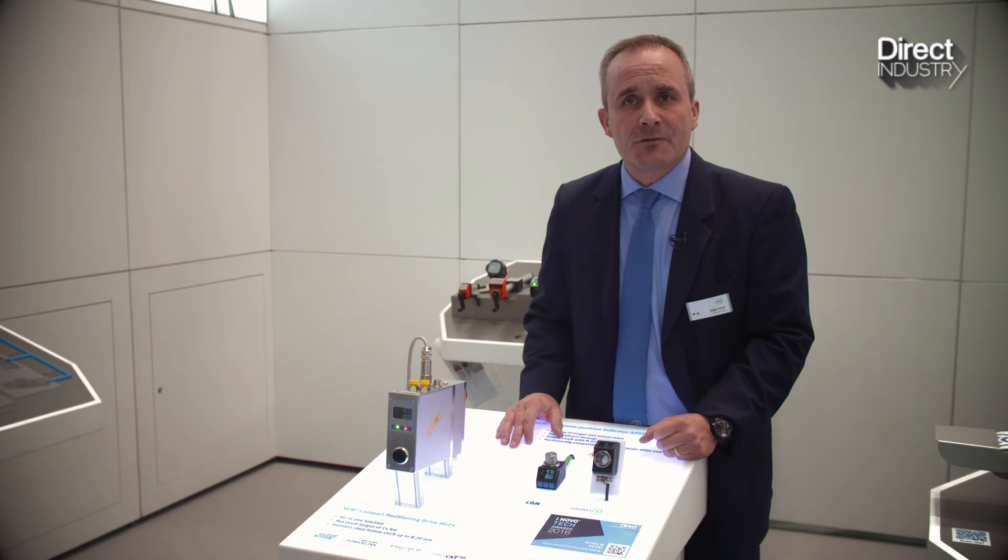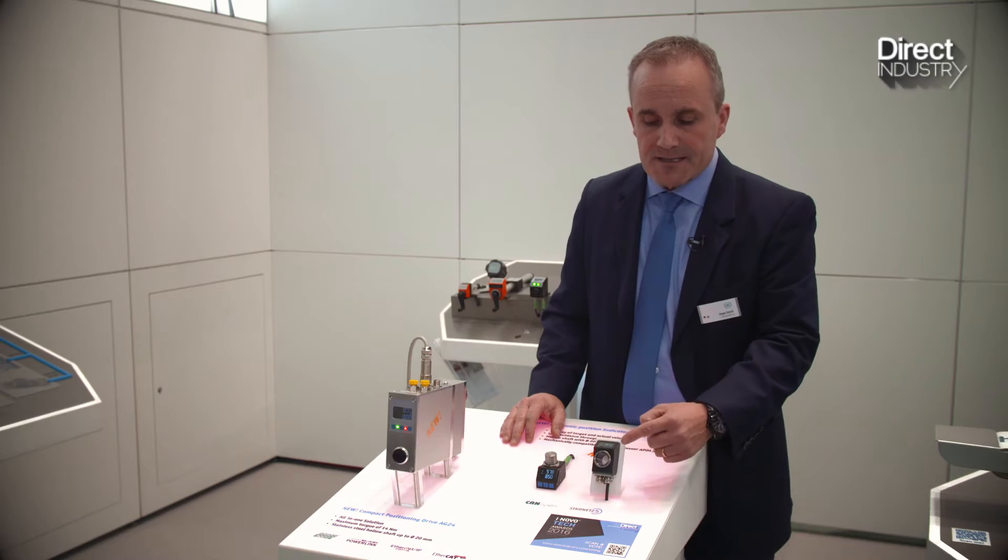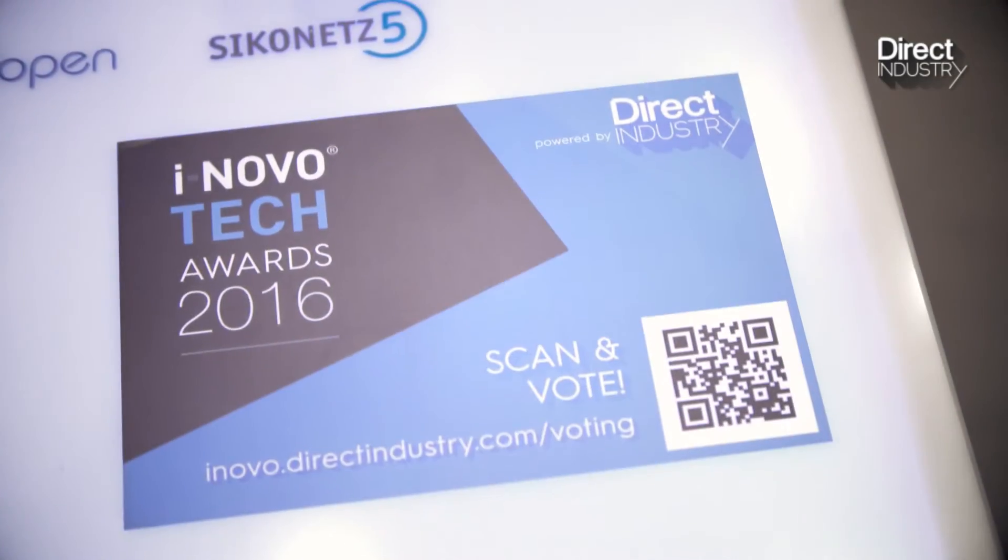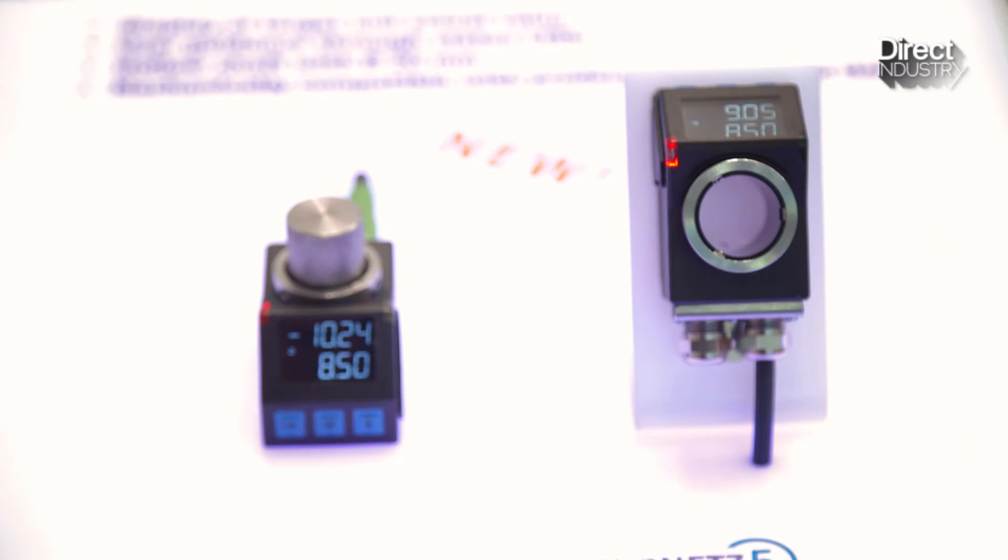The indicator is connected to the PLC so depending on the recipe the indicator will show different target values and the machine operator can adjust the machine to the required values.